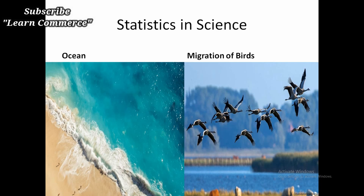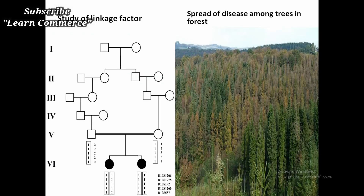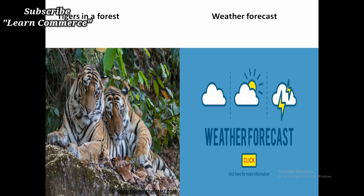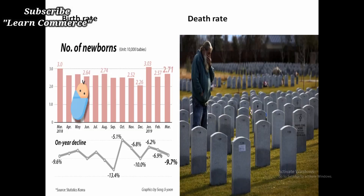4. Statistics in Science. The physical and natural sciences like astronomy, engineering, biometry, and medicine use statistical methods. Also in agricultural science, statistics are widely used. Statistical methods are much used in the study of problems associated with biological science. They are applied in the study of growth of plants, movement of fish populations in the ocean, migration of birds, effect of newly invented medicines, theories of heredity, study of leakage factor, spread of disease among trees in forests, estimation of number of tigers in forests, weather forecasting, estimation of yield of crops, effect of fertility on yield, birth rate, death rate, population growth, and growth of bacteria, etc.